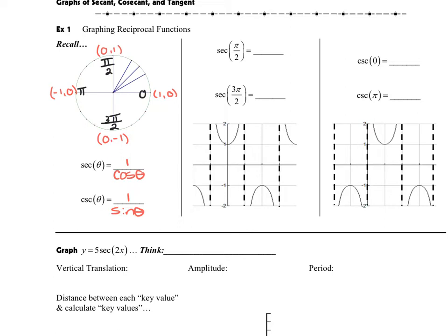For example, the secant of pi over 2 right here, our secant of pi over 2 is going to be undefined because that's going to be 1 over a 0. So this is undefined. And the secant of 3 pi over 2 is also undefined.